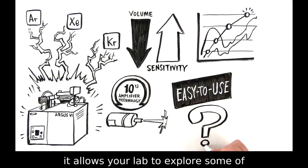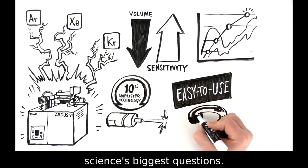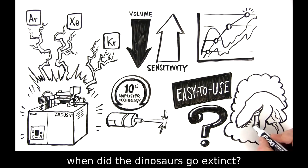The Argus 6 noble gas mass spectrometer also offers unparalleled accuracy and precision. Powerful and easy to use, it allows your lab to explore some of science's biggest questions. For instance, when did the dinosaurs go extinct?